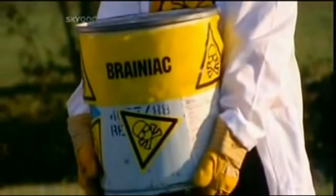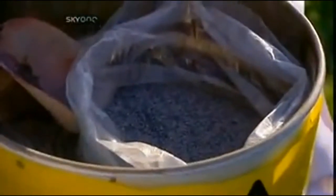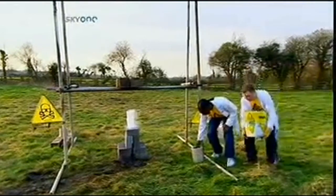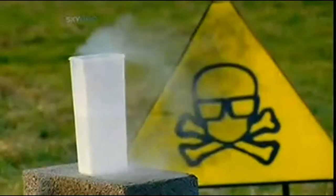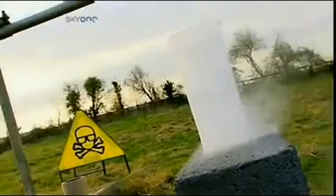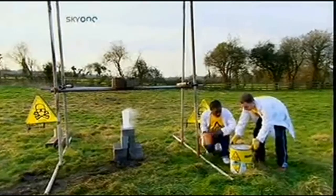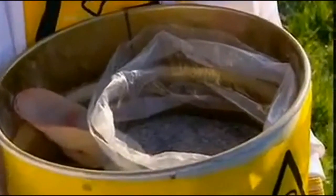This is thermite. It's a powdered mixture of iron oxide and aluminum, which when ignited burns at 2,500 degrees Celsius, which is very, very hot. This is liquid nitrogen. It's specially stored at minus 198 degrees Celsius. That's 163 degrees colder than the North Pole in winter. But is it cold enough to neutralize the intense heat of thermite?